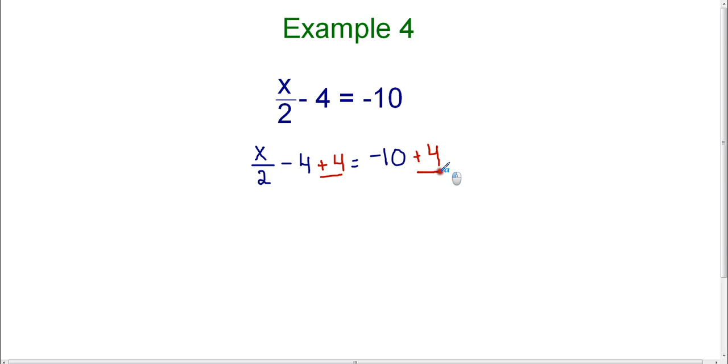And whatever I do to one side, I must do to the other side. The reason that I added four is because now we're going to think of this as negative four. Negative four plus four is zero, and now it's gone. And so now on the left-hand side, the only thing that I have left is the x divided by two.